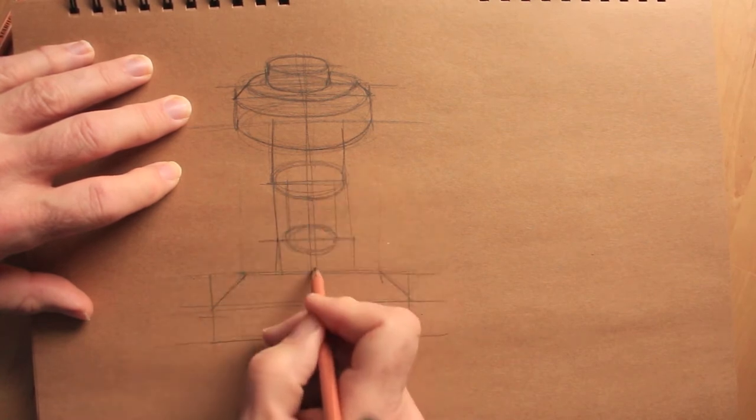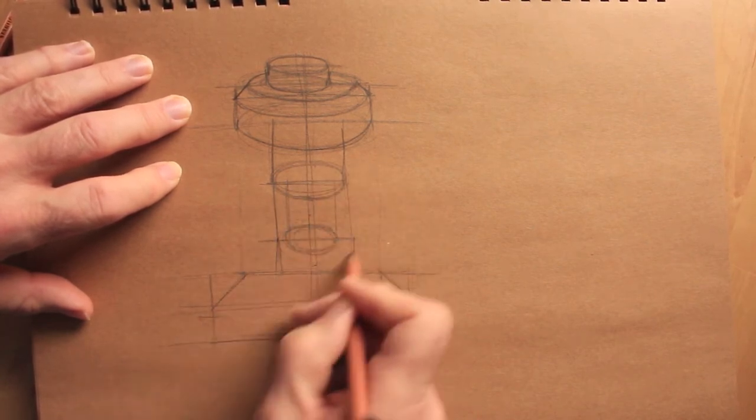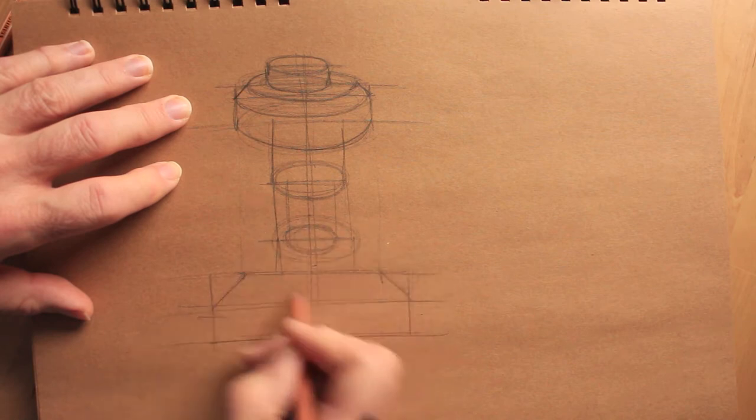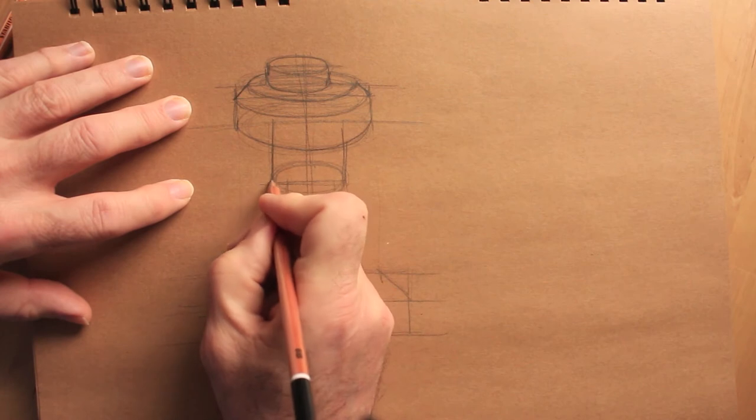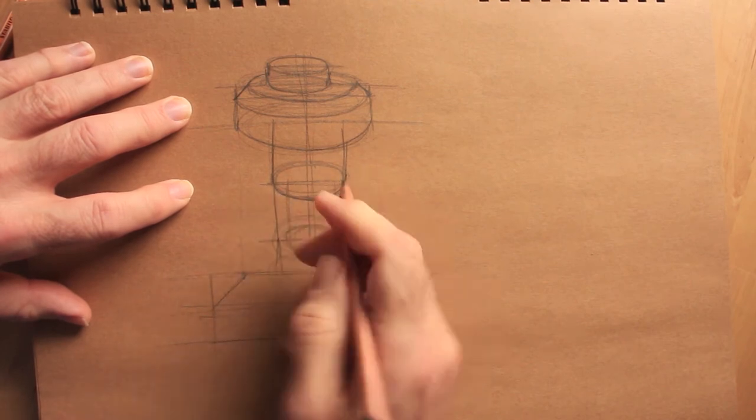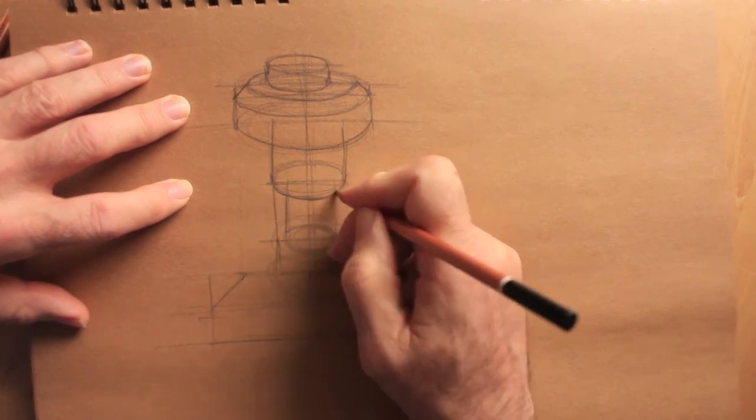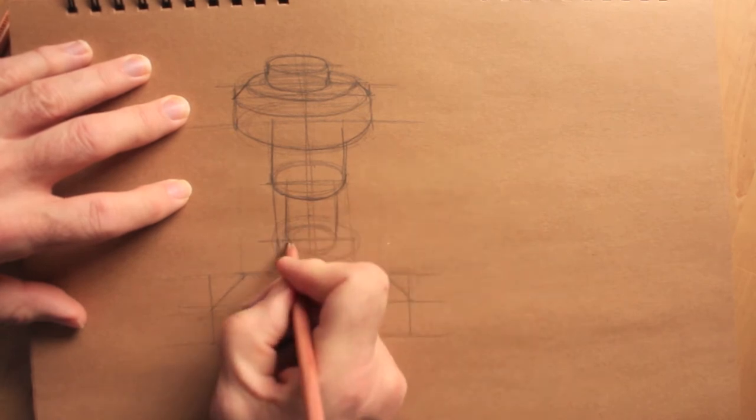Each one getting fuller, fatter, more roundedness. It becomes a bit more challenging each time because it overlaps the drawing below. So we've built up a series of two cylinders with the upper and lower one the same diameter.